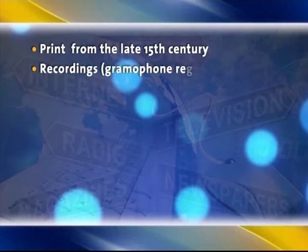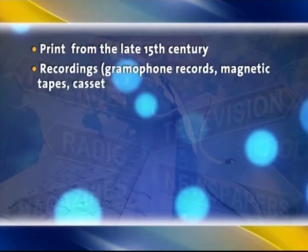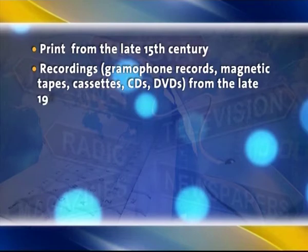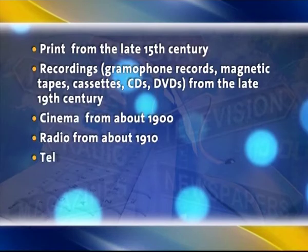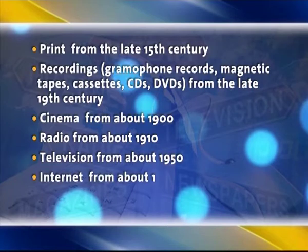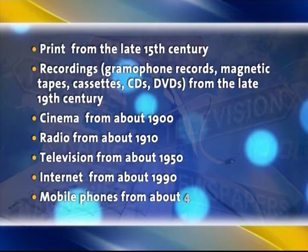The 7 mass media classification became popular in the 2000s. According to it, the 7 mass media are: print (from the late 15th century), recordings such as gramophone records, magnetic tapes, cassettes, CDs and DVDs (from the late 19th century), cinema (from about 1900), radio (from about 1910), television (from about 1950), internet (from about 1990), and mobile phones (from about 2000).